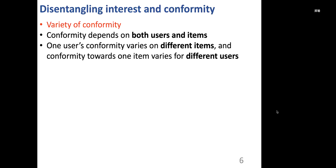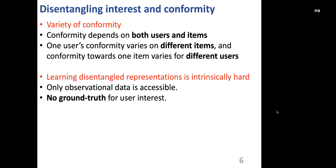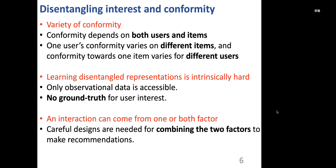There are several challenges of disentangling interest and conformity. The first challenge is the variety of conformity, which means that conformity depends on both users and items. For example, users tend to conform more when they are not familiar with the item. The second challenge is that learning disentangled representations is intrinsically hard, since we only have observational data and there is no ground truth for user interest. The last challenge is that how each interaction is resulted from the two factors is very complicated, and careful designs are needed for combining the two factors to make the final recommendations.